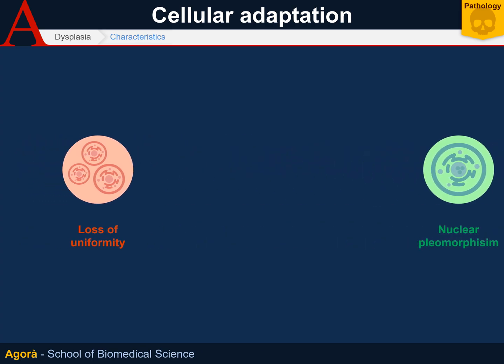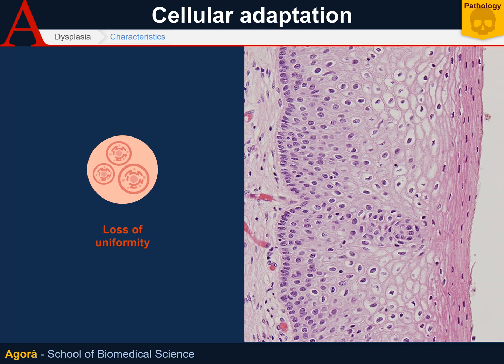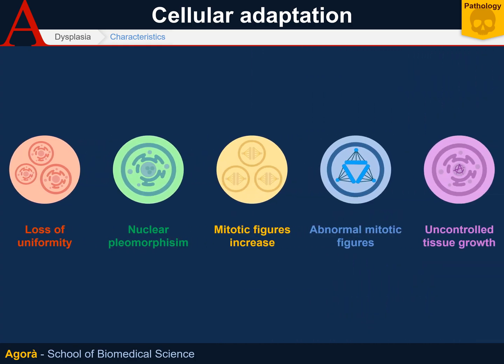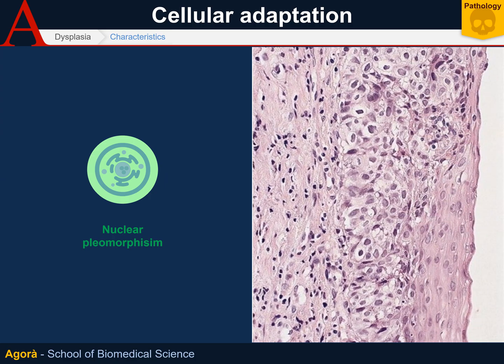Dysplasia's loss of uniformity can be identified by its model tissue, where cells have different forms and dimensions. At this point, nuclear pleomorphism arises — cell nuclei are different from each other and from their normal form. Their nuclear membrane is thicker, with numerous nucleoli and chromatins being dispersed due to the higher cell differentiation process.